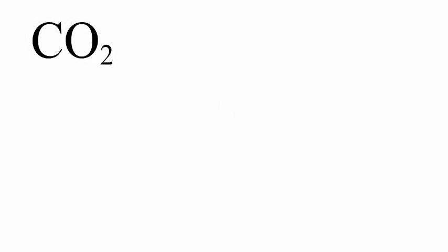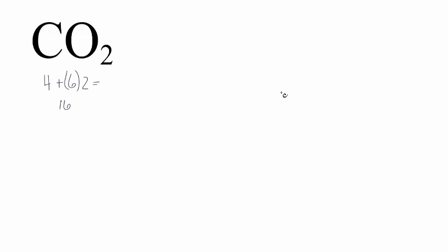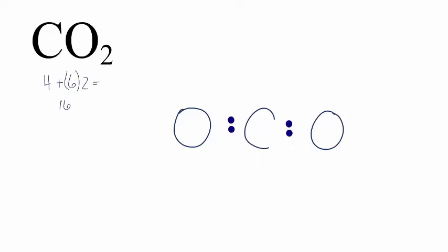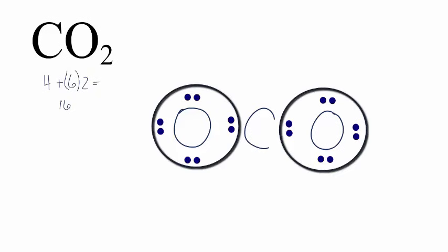CO2, carbon dioxide, is a little more complicated but not too bad. Let's count the valence electrons: we have four for carbon, oxygen has six, and we have two oxygens, giving us a total of 4 plus 12, which is 16 valence electrons. We'll put the least electronegative atom in the center — that's the carbon — and then we'll put an oxygen on either side. Next, we'll move electrons to the center to form the chemical bonds, then complete the octet around the oxygen atoms. We've used all 16 valence electrons.